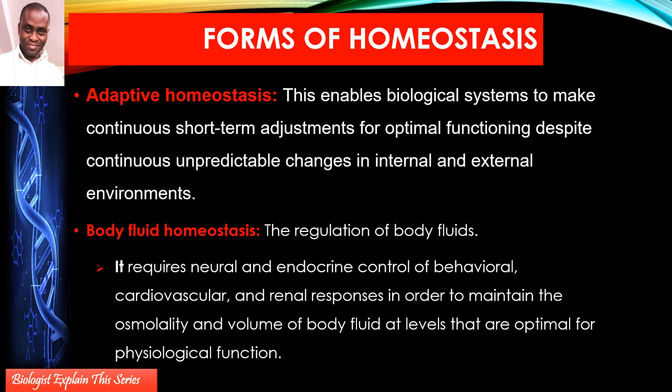For temperature, for example, the set point — what is favorable — is about 37°C, which we consider as the body temperature. When you begin to have something higher than that it is a problem, and lower than 37°C is also a problem. The same applies to blood glucose level. The regulation is required to maintain the water potential of the blood plasma, which is why blood-fluid homeostasis is important — it covers what we call osmoregulation.